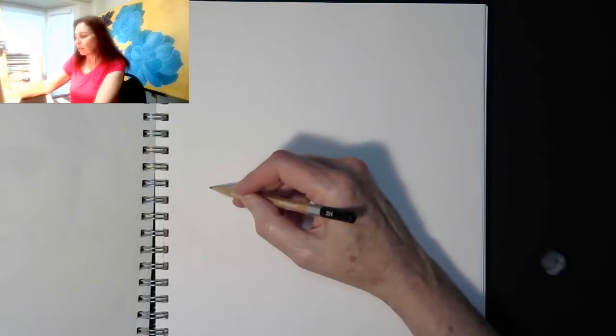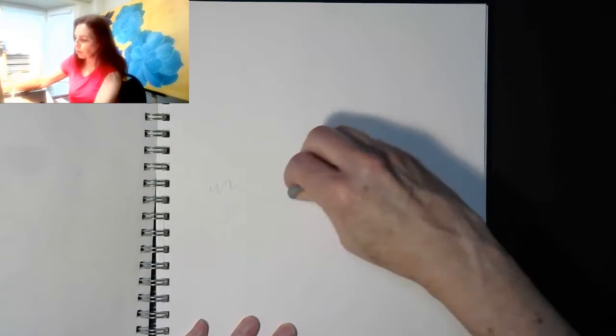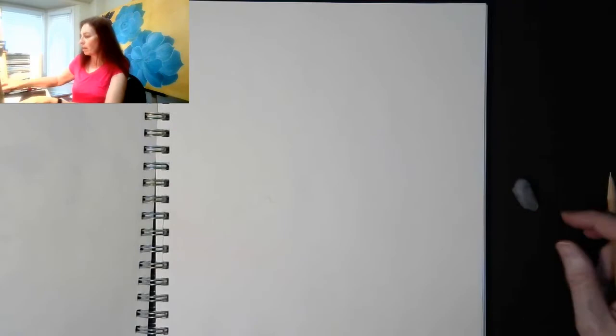The 2H doesn't draw very darkly, which allows me to erase it easily if I'm using watercolor paper, which I sometimes do. I also use a kneaded eraser, which allows me to erase without creating little eraser bits, and I can squeeze it into a particular shape to get into smaller areas. That is the first set of supplies.